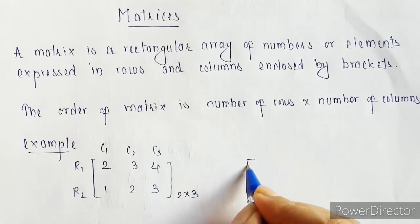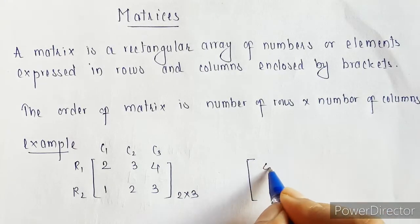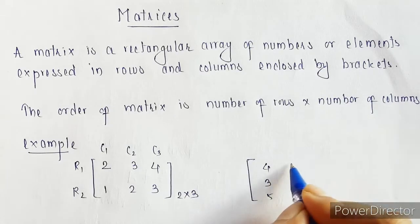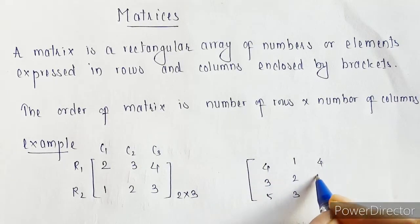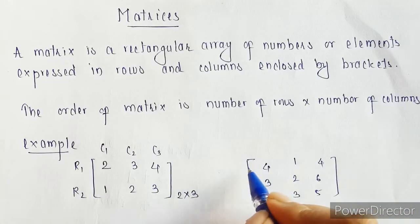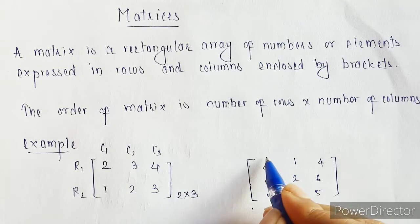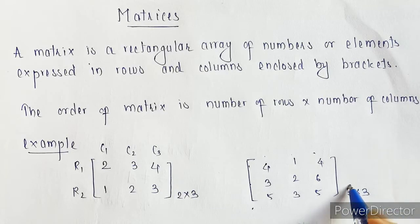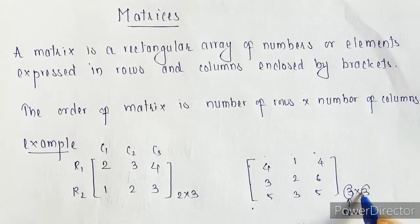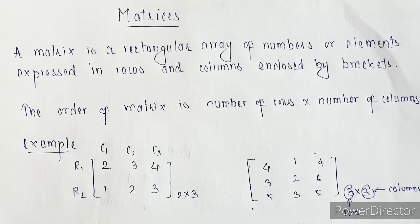Let me take another example. Suppose we have a matrix with three rows R1, R2, R3 and three columns C1, C2, and C3. So the order of this matrix will be 3 cross 3. The first number represents the number of rows and the second represents the number of columns.